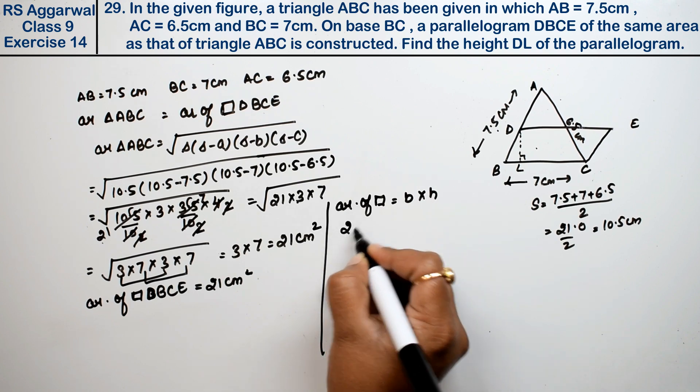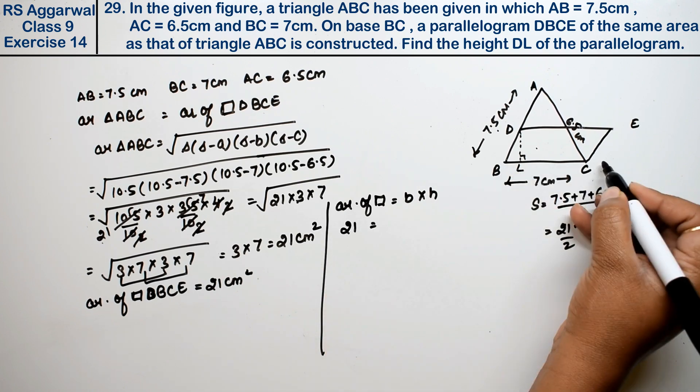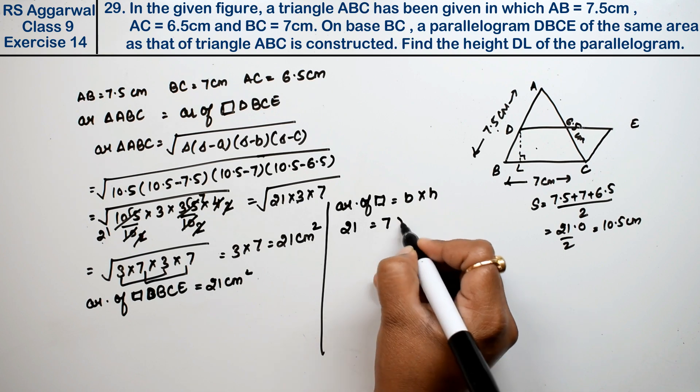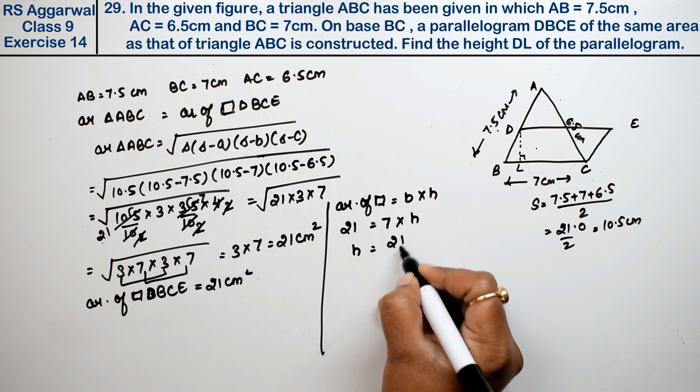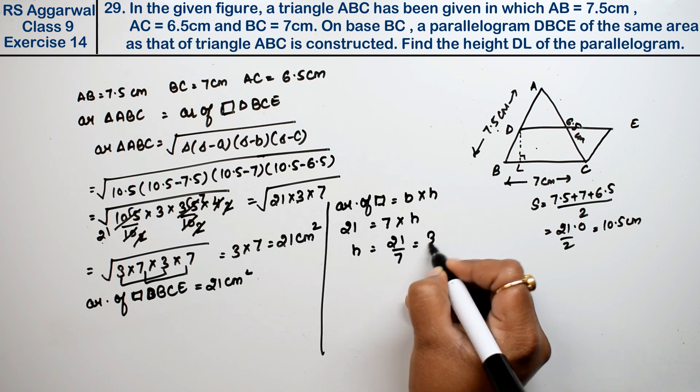So 21 equals base, which is the same base BC, that is 7, times height which we need to find. Height becomes 21 divided by 7, which is 3 cm.